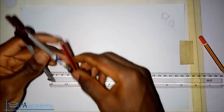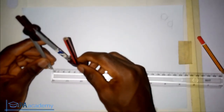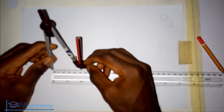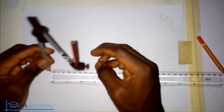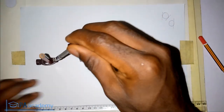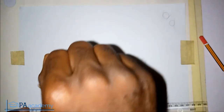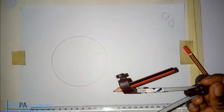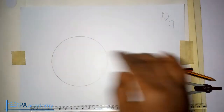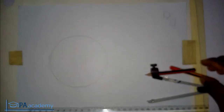To start with, let me draw a circle. I'm going to be using a circle with a radius of five centimeters, which is equivalent to 50 millimeters. Here I already have my circle.